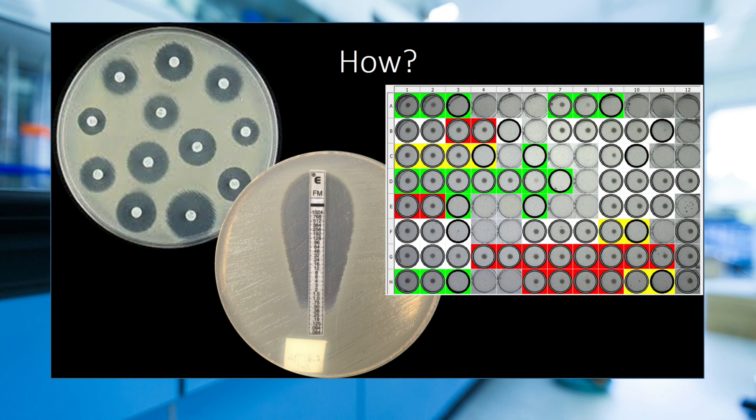The broth micro dilution method pictured on the right is a high-throughput method for AST performed in a 96-well plate that contains several antimicrobial drugs. Each drug has a series of wells representing a range of concentrations. Because broth micro dilution is the primary AST method used in my lab, it will be the focus for the remainder of this video.